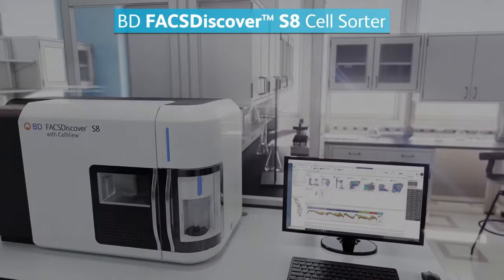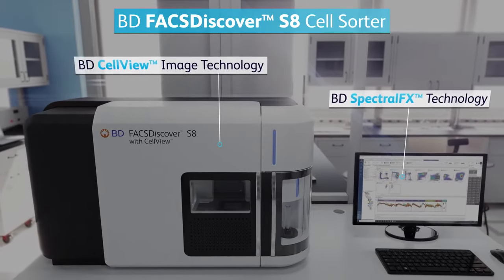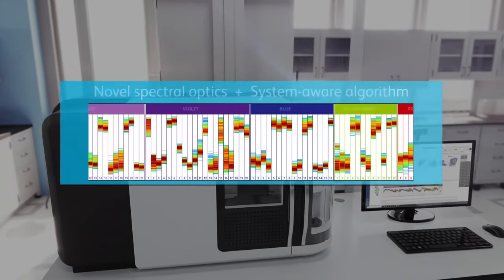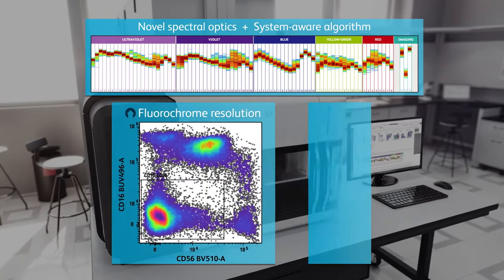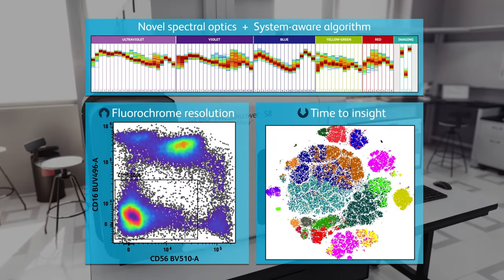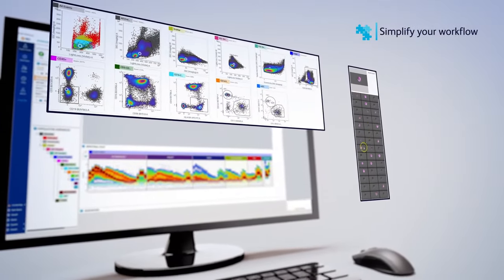BD FACSDiscover S8 Cell Sorter with BD CellView Image Technology and BD Spectral FX Technology combine novel spectral optics with a system-aware algorithm to increase fluorochrome resolution and reduce time to insight. Simplify your workflow with built-in visual inspection and automated features.